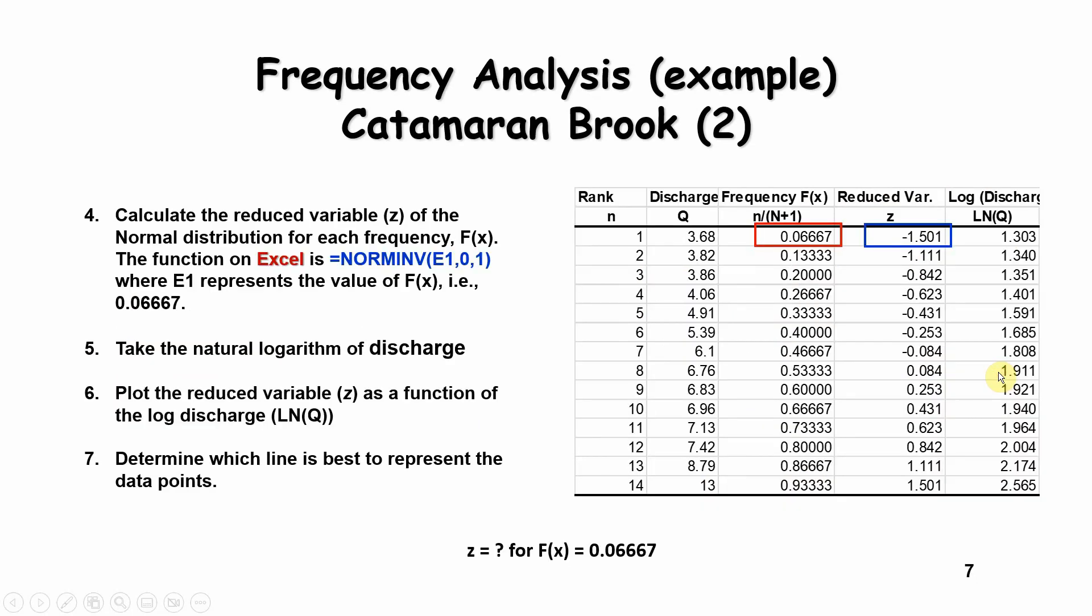The next thing is to calculate your reduced variable z of the normal distribution. You can either do that through going through some of the tables, and we will present an example of that in a few minutes, or you can get these values directly from Excel using the norm inverse function here, with the probability value and 0 to 1 as parameters.